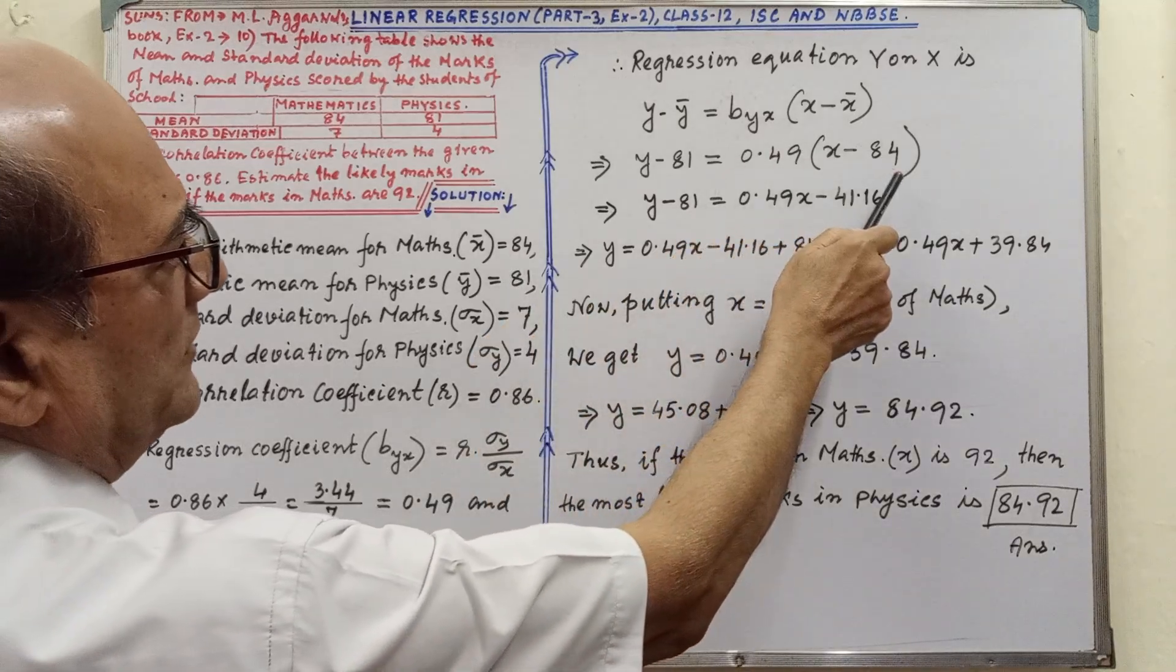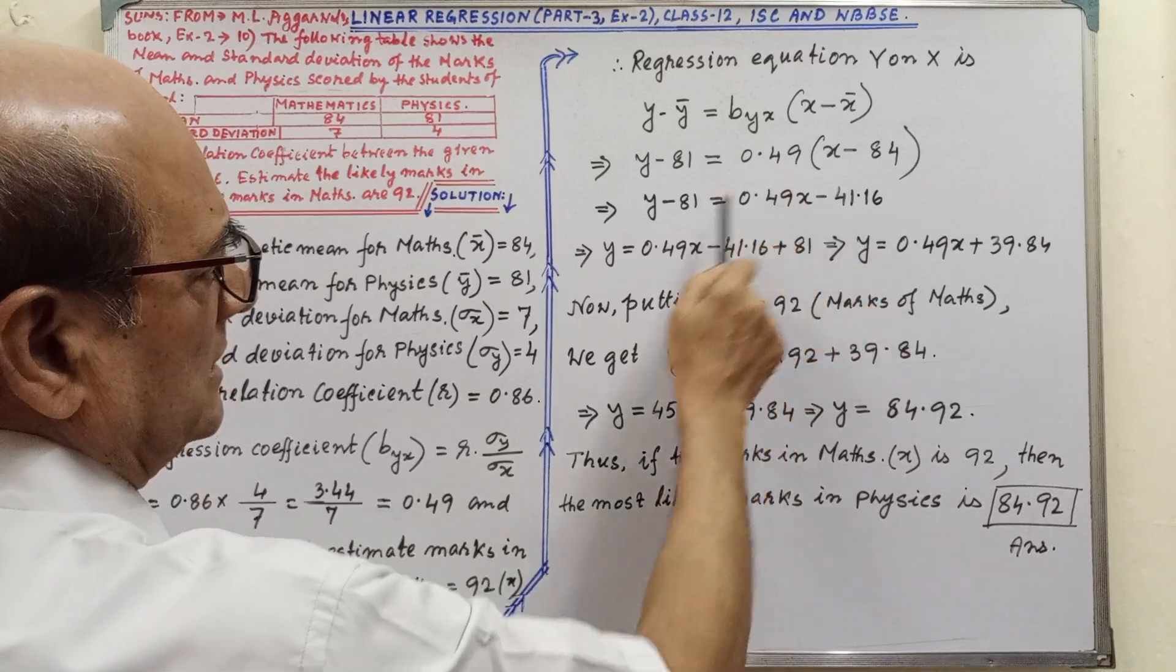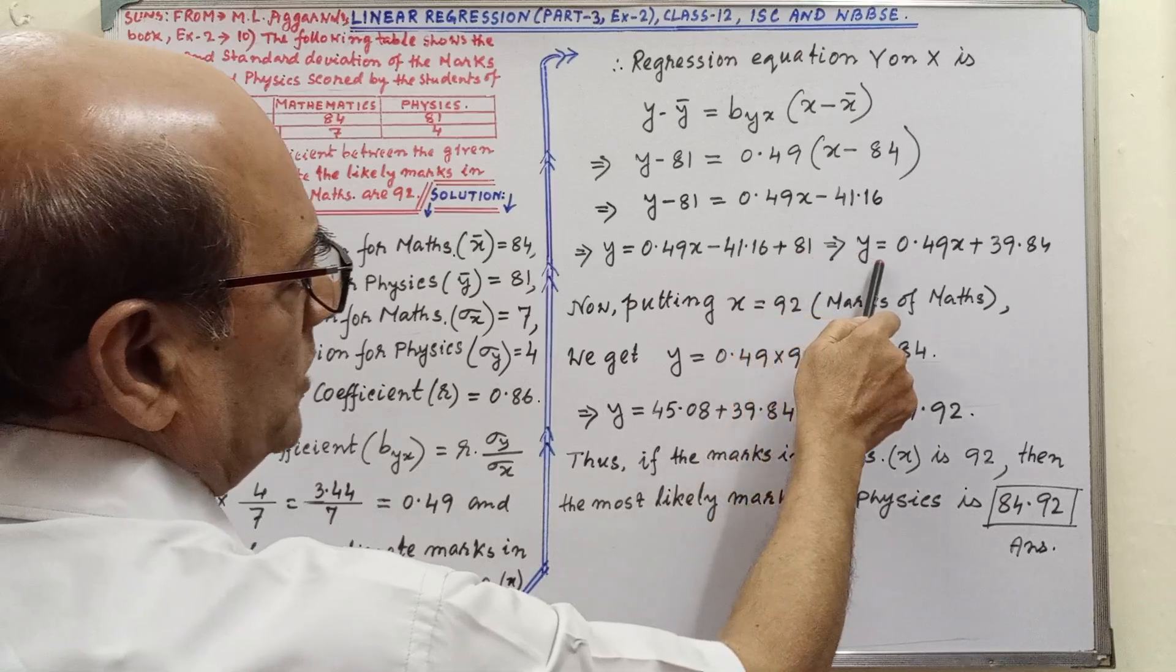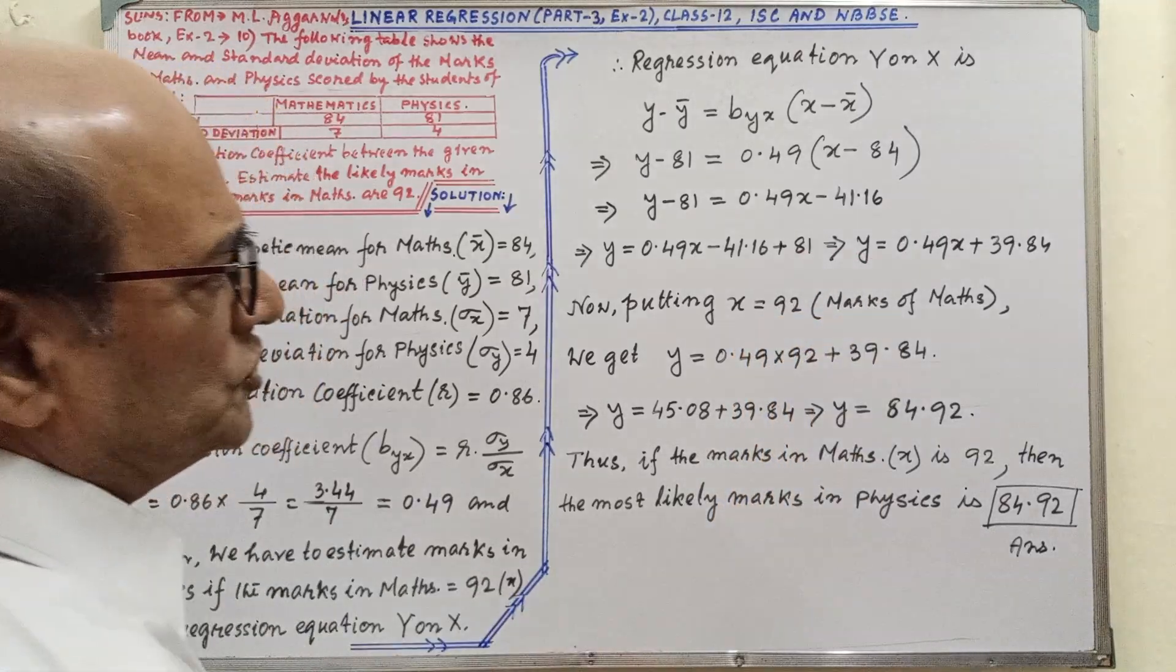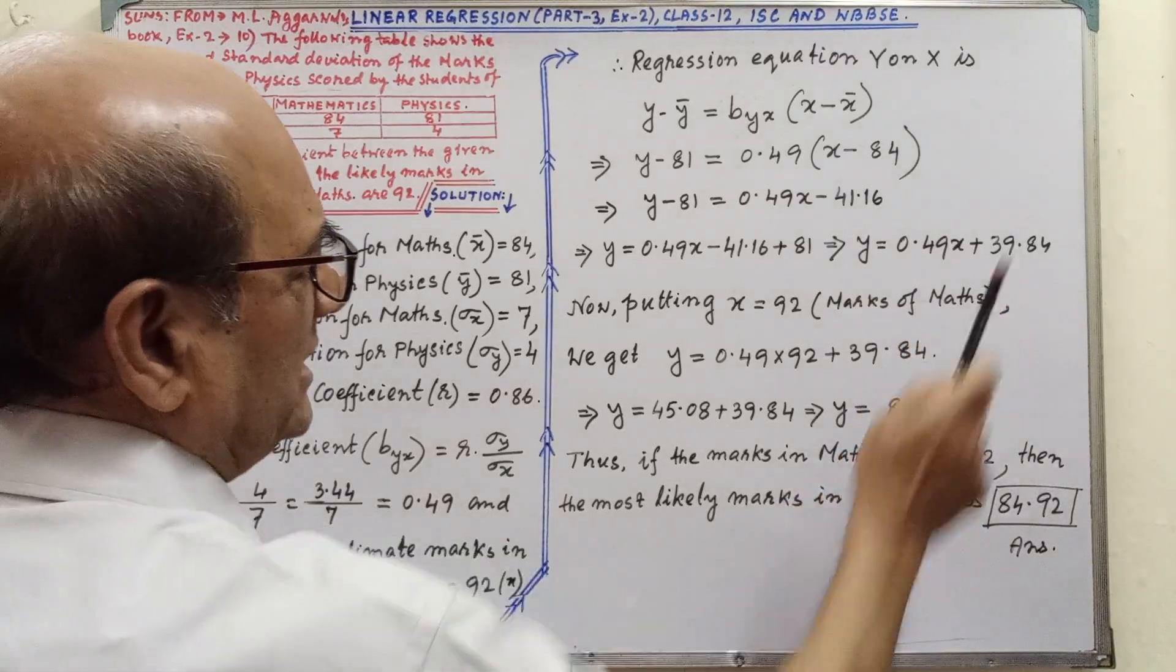After writing the relevant values, we have to simplify. Very simple simplification. By looking at the steps, easily you will understand. We are getting y equals 0.49x plus 39.84.